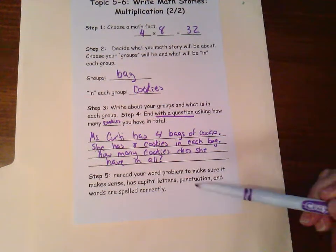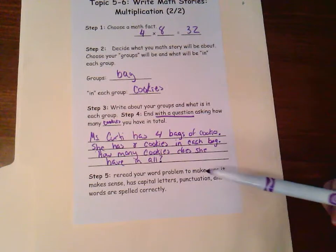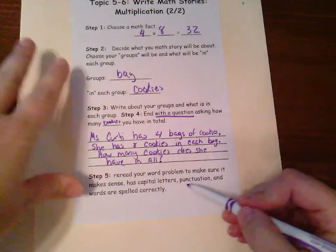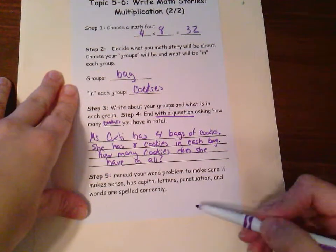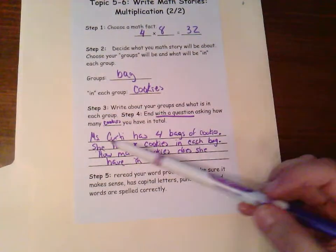All right, step five, reread your word problem. Make sure it makes sense that you have your capitals, your punctuation, you'll need periods, and a question mark at the end. And then just double check that you have the word spelled correctly. So let's go ahead and reread this.